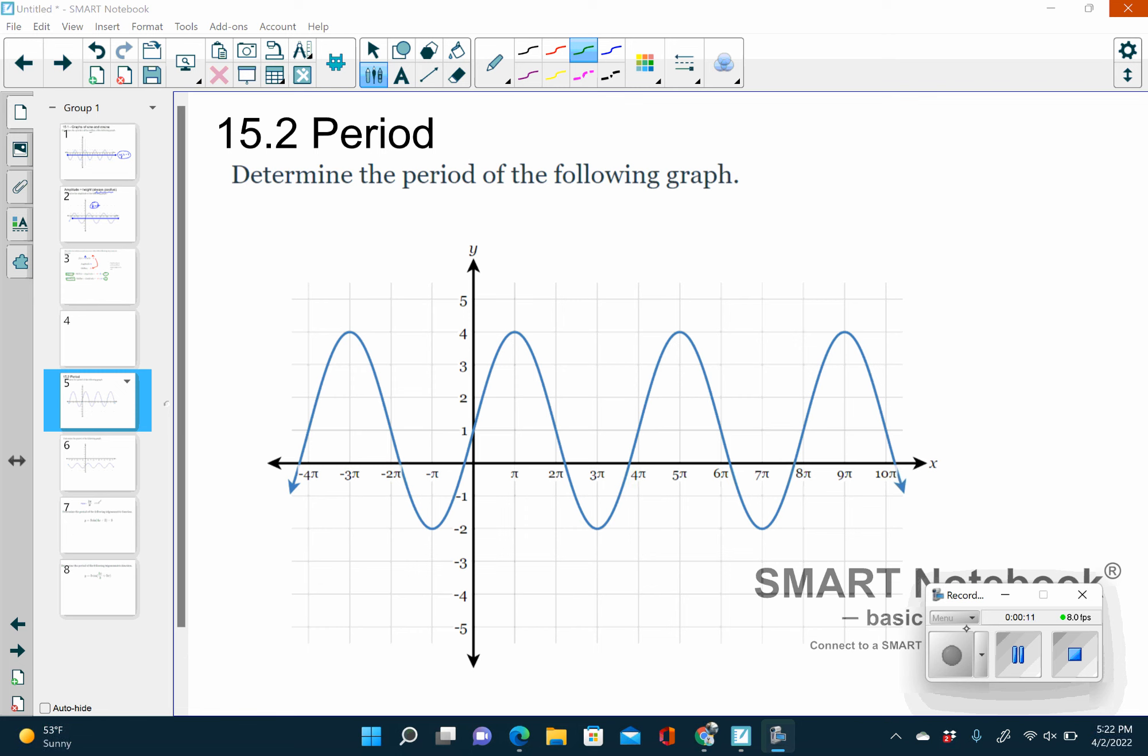We'll talk about the equation of the period in a second. But this is all period is, okay? You look and see how long it takes to make a full cycle. So watch, this is what I mean. So a full cycle is you go up, you go past that point, you go down, and you go back to that point. Right here. So this is 4 pi. So the period of this graph is 4 pi. Again, how long it takes to make one full cycle.